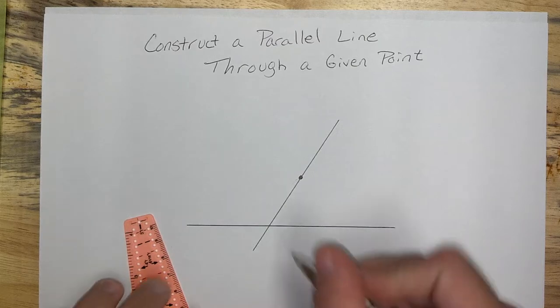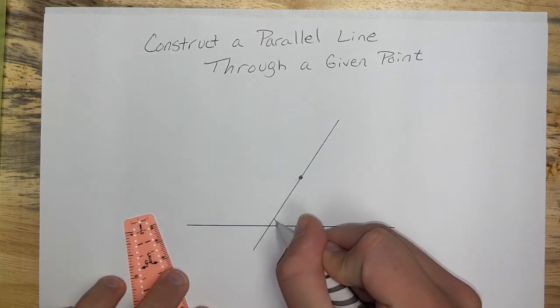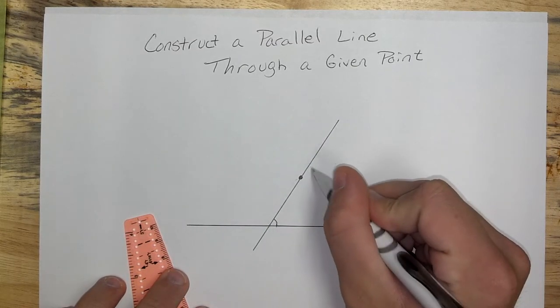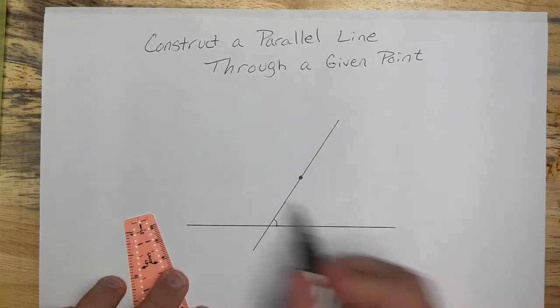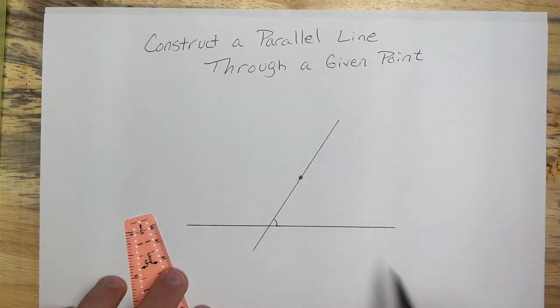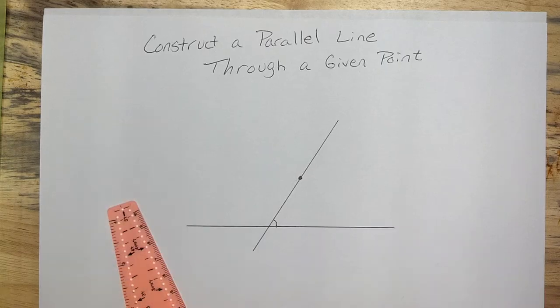Because now what we're going to do is we're going to copy this angle right up here so that this line and another line that I create, that bottom part of the angle, match up.